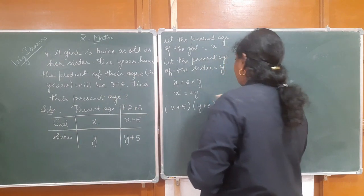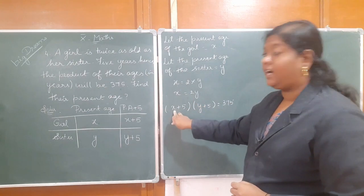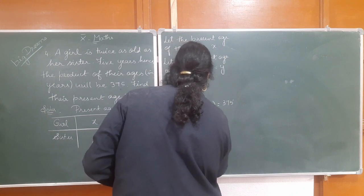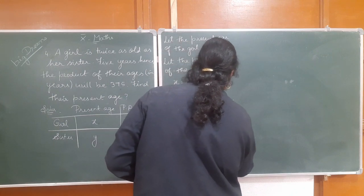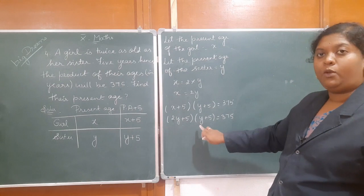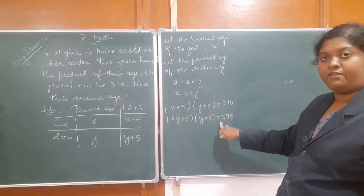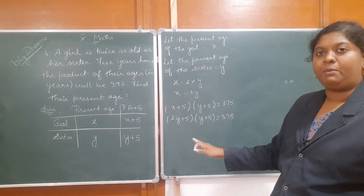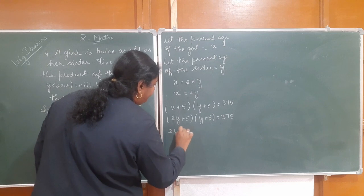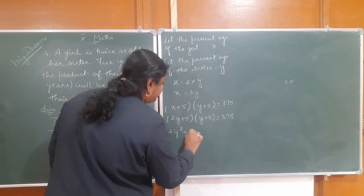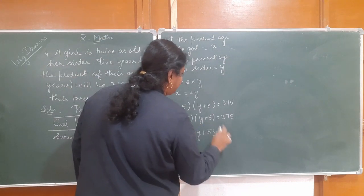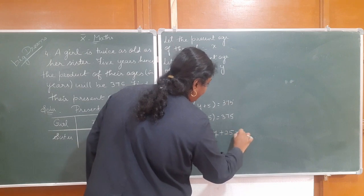Now, x is equal to 2y. Substituting, we get 2y plus 5 into y plus 5 is equal to 375. Expanding by normal multiplication: 2y into y gives 2y squared; 2y into 5 gives 10y; 5 into y gives 5y; 5 into 5 gives 25. So 2y squared plus 10y plus 5y plus 25 equals 375.